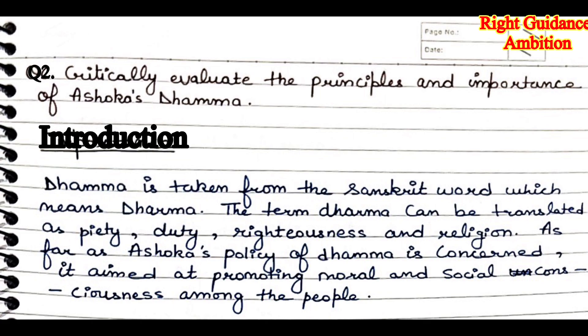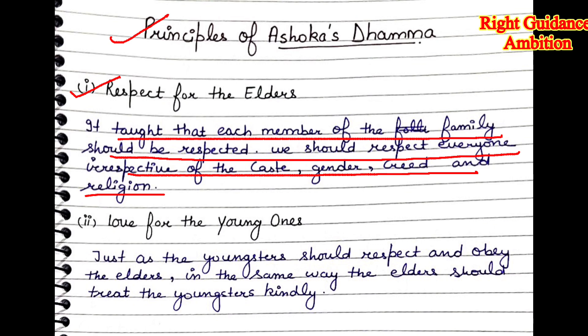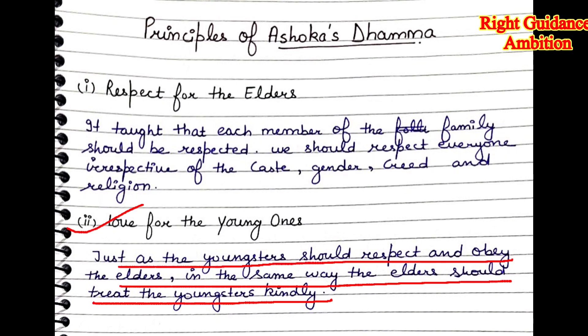Now let's discuss the principles of Ashoka's Dhamma. The first point is respect for the elders — that we should respect elders and all family members, irrespective of caste, gender, creed, and religion. We should respect every person. The second point is love for the young ones — just as youngsters should respect and obey elders, in the same way elders should treat youngsters kindly and listen to their viewpoint.